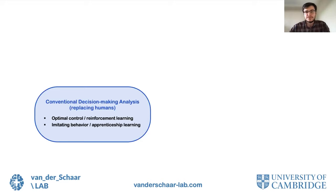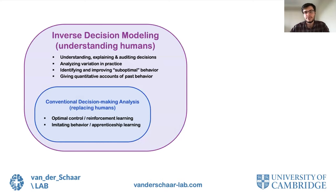It is important to distinguish our approach from the existing work in decision making analysis. Conventional methods almost always focus on constructing autonomous agents that can replace humans, either by imitating their behavior or discovering better ways to act. Instead, with Inverse Decision Modeling, we are concerned with leveraging machine learning to help humans become better decision makers. Overall, we aim to understand and explain decisions, which entails analyzing variation in practice, identifying suboptimal behavior and the causes behind it, and giving quantitative accounts of past behavior, as in ICB.